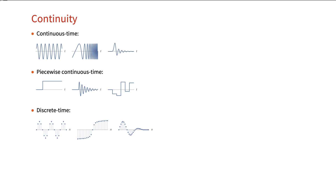A discrete time signal, on the other hand, is defined only at a finite or infinite set of distinct points in its domain. These points are usually evenly spaced over the domain. For convenience, we use an interval of size 1 between the points, so the signal is defined for integers only. In the same way, we could have piecewise discrete time signals.